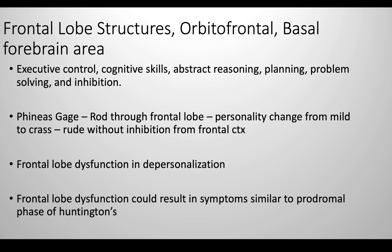We're going to talk about the frontal lobe structures — the orbitofrontal cortex and the basal forebrain area. These regions are implicated in executive control, cognitive skills, abstract reasoning and planning, and they're critical for problem-solving and inhibition. The frontal lobe is also the most developed brain region in humans compared to any other organism. The most famous case of frontal lobe damage is Phineas Gage, where a metal tamping rod went through his frontal lobe. After the accident, his personality changed completely — he was no longer the mild-mannered man he once was. His behavior completely changed, he could no longer inhibit himself, he was really rash and rude, and he eventually died shortly after.